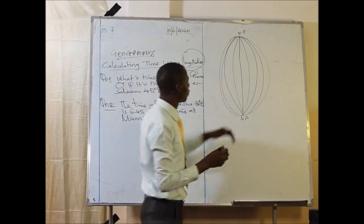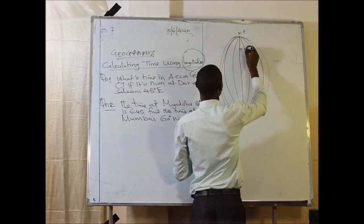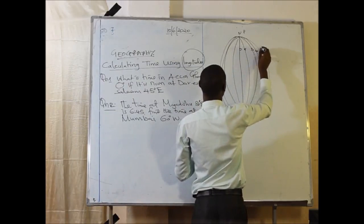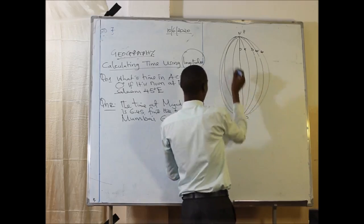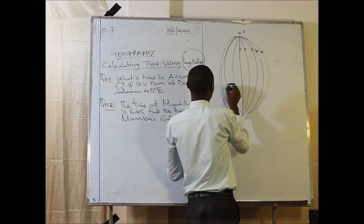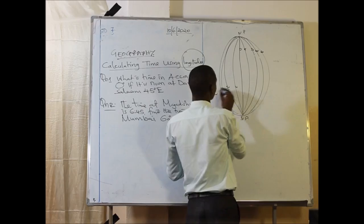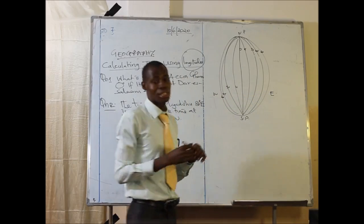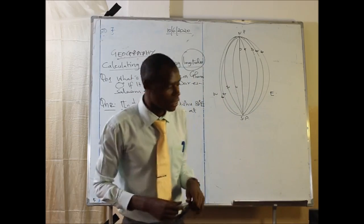Let's say this is zero degrees, this is 15, this is 30, this is 45, and this is 60. The same on this side: 15, 30, 45, and 60 degrees. This side is East, this side is West. That means the lines are divided at every 15 degrees.